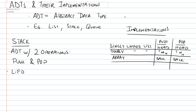An abstract data type basically defines a set of things and the operations that could be performed on these things or with these things or by these things. So it's these two things. Now, it's very abstract — that's why it's called abstract data type. And the way we implement it is using singly linked lists, doubly linked lists, arrays, and so on. But the abstract data type is independent of the implementation, so for every abstract data type, there could be multiple implementations.